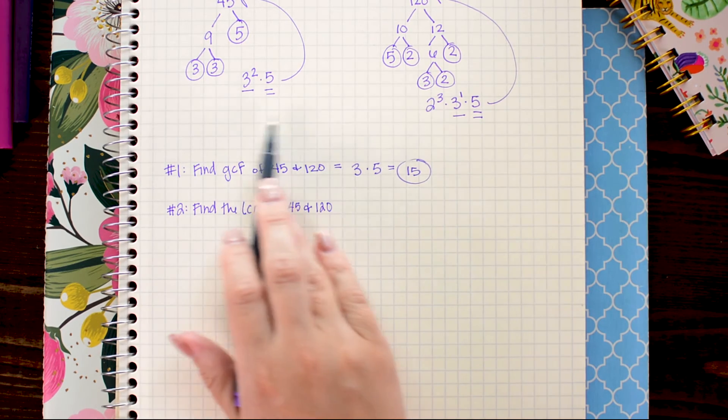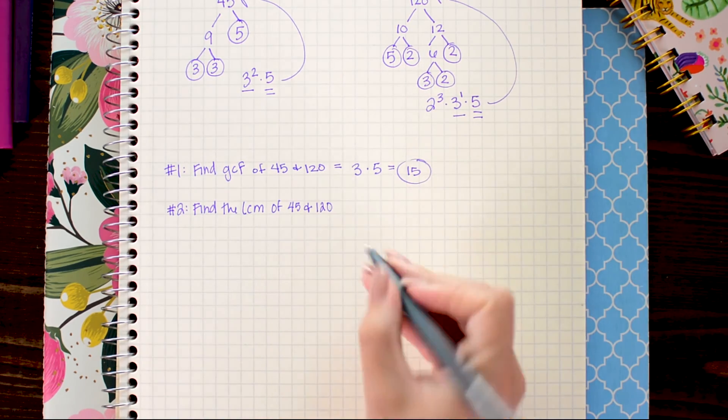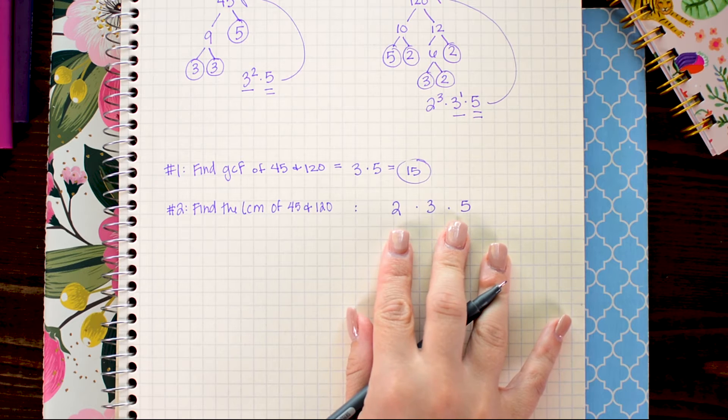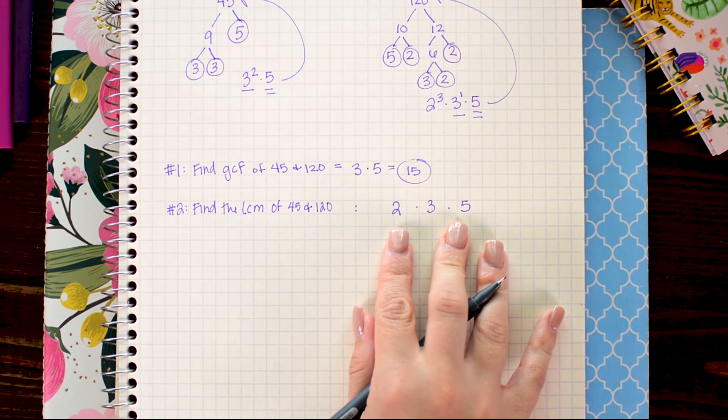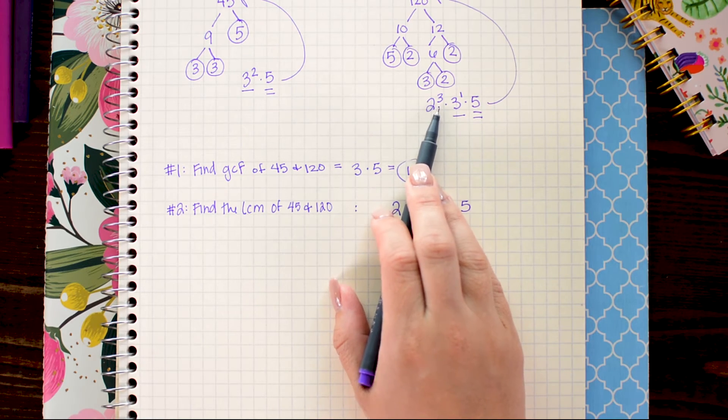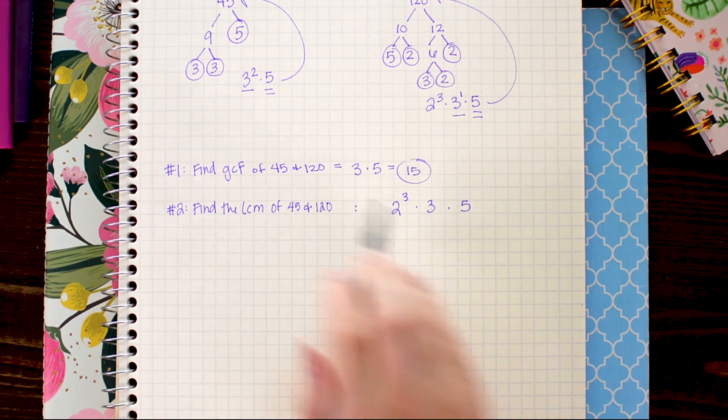So looking at this I have 2's 3's and 5's between these two factorizations. Now I'm going to choose the largest power that shows up on each of these. So for the 2 the largest power is 3. For the 3 the largest power is 2.